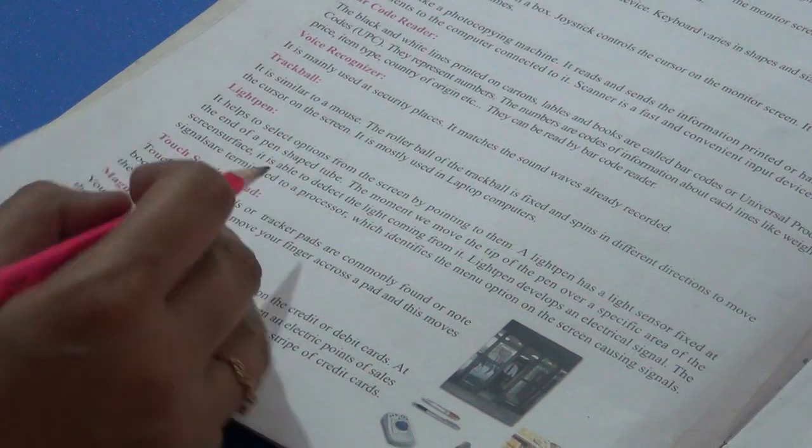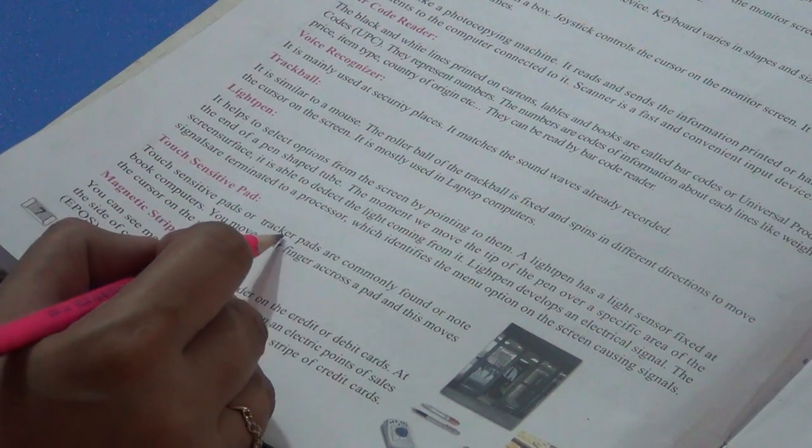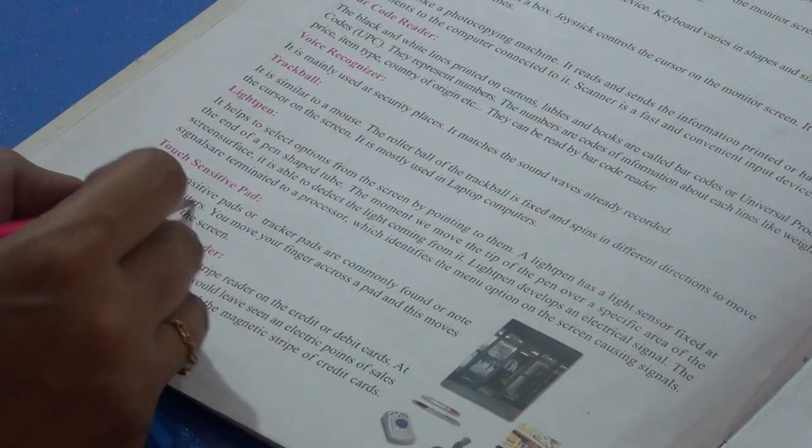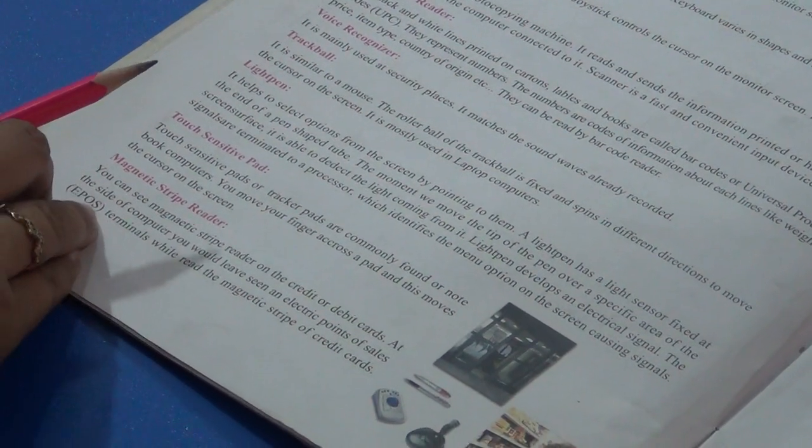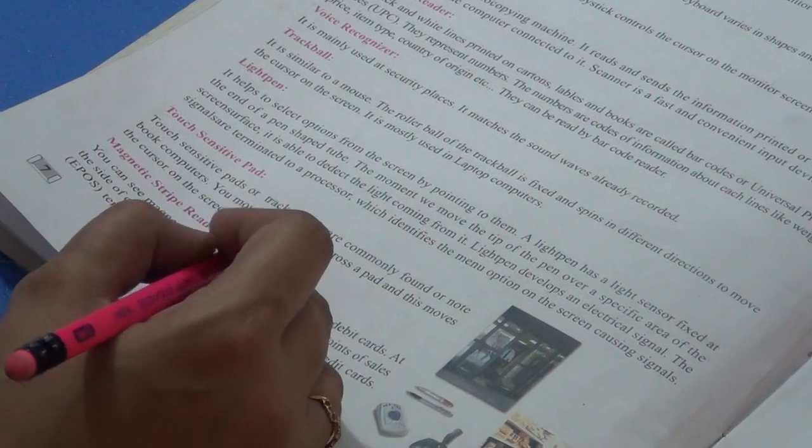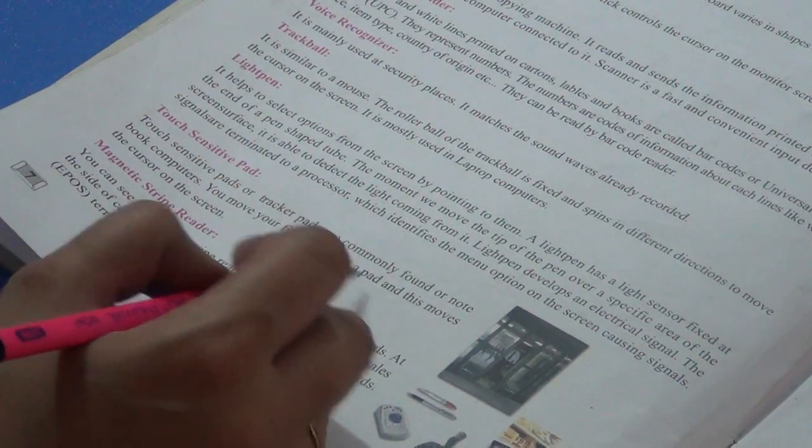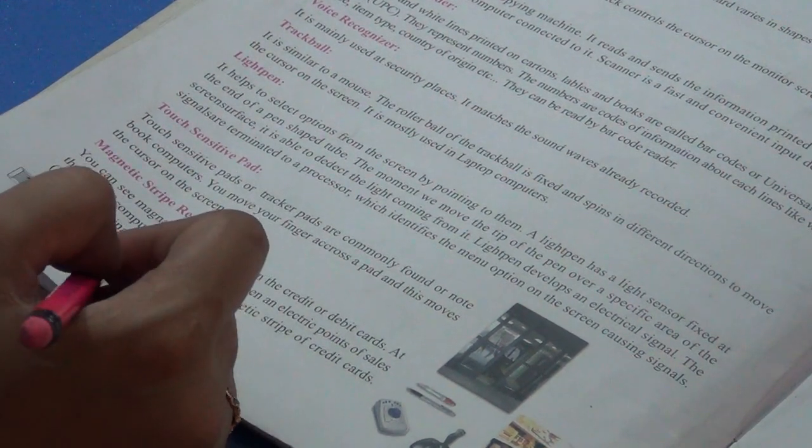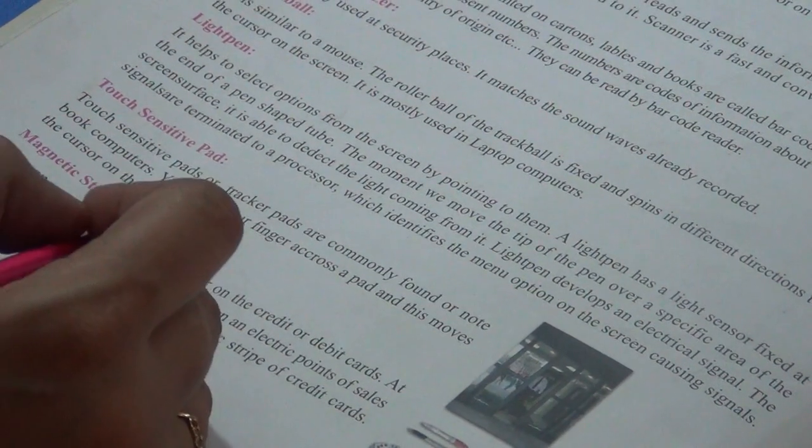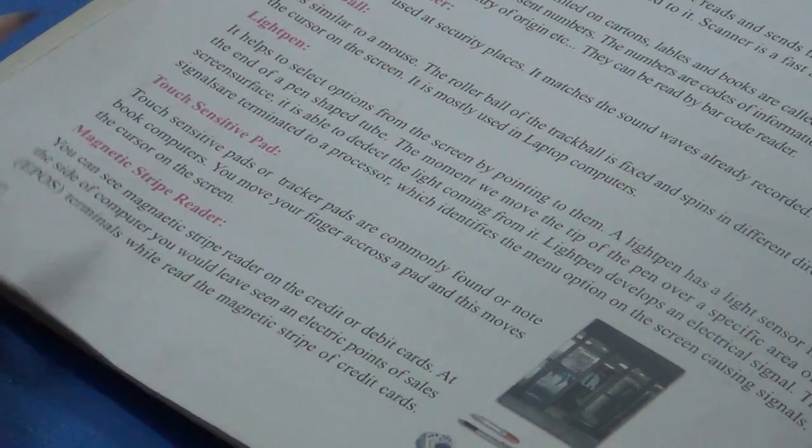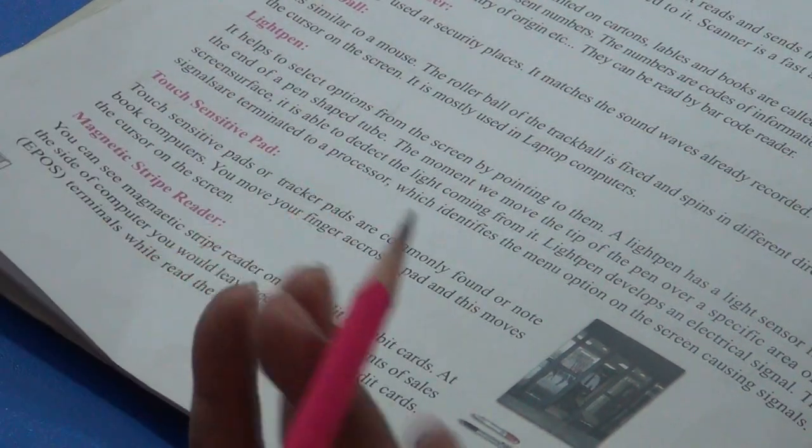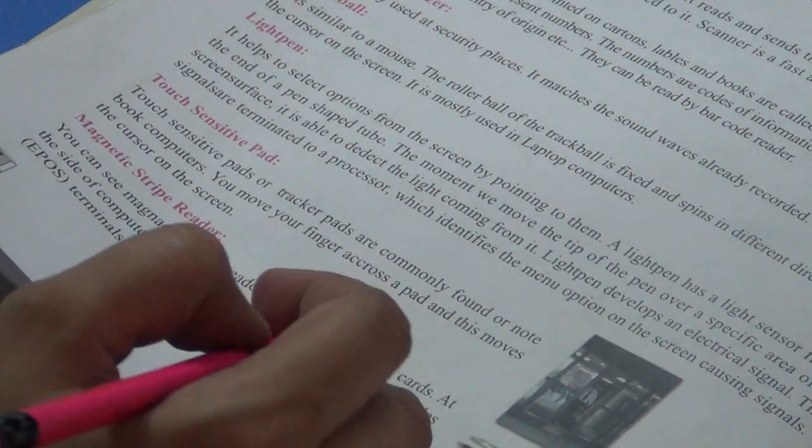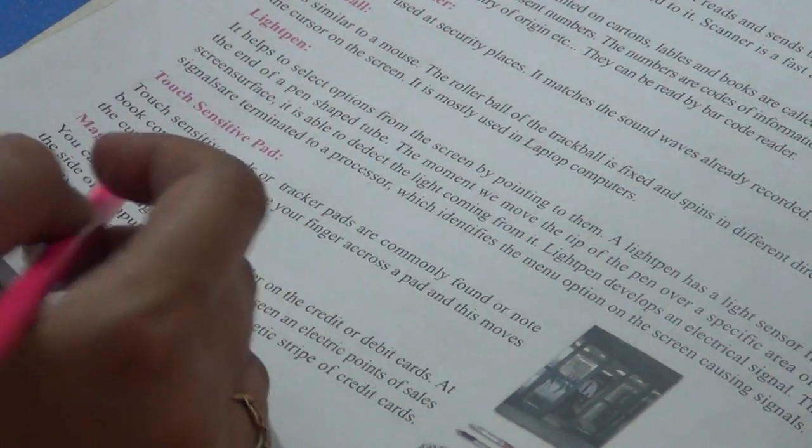Touch sensitive pads. Touch sensitive pads or tracker pads are commonly found on notebook computers. You move your finger across a pad and this moves the cursor on the screen. If you touch your finger on the screen, you move the cursor. Touch screen. You have seen all of these things. Mobile is touch, notebooks are touch, camera is touch, DSLR.